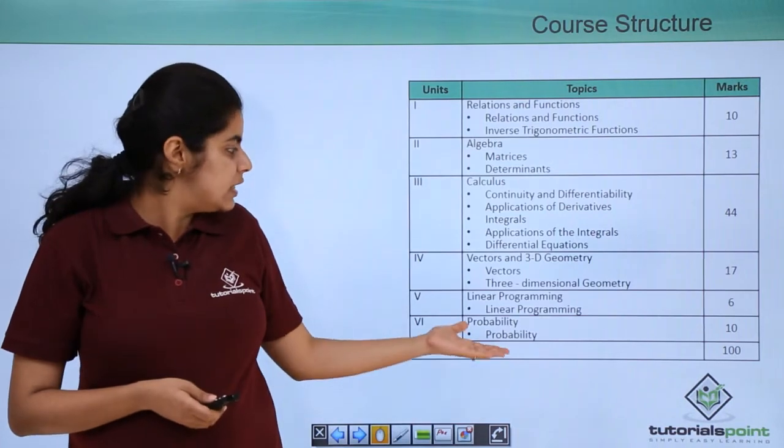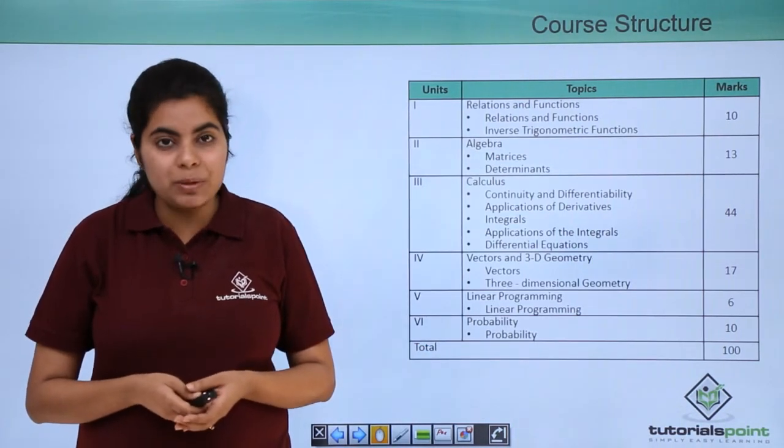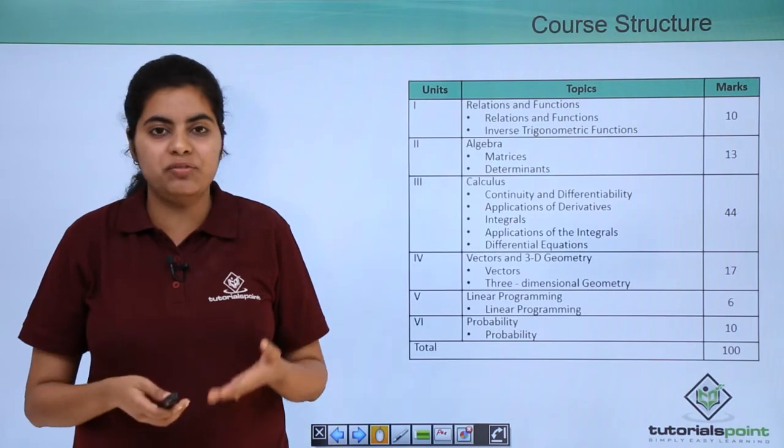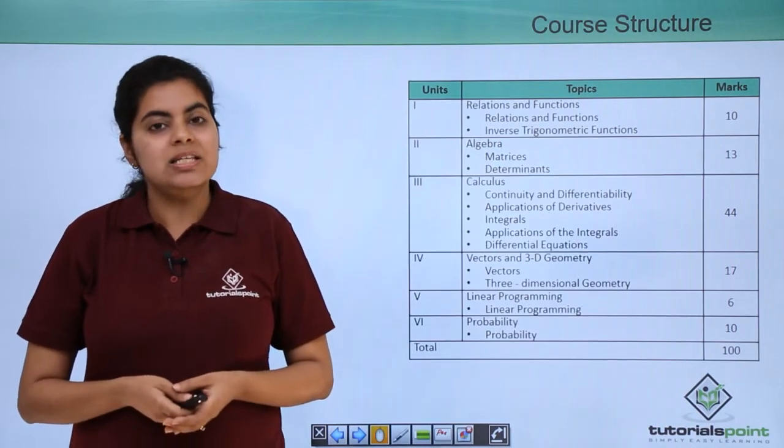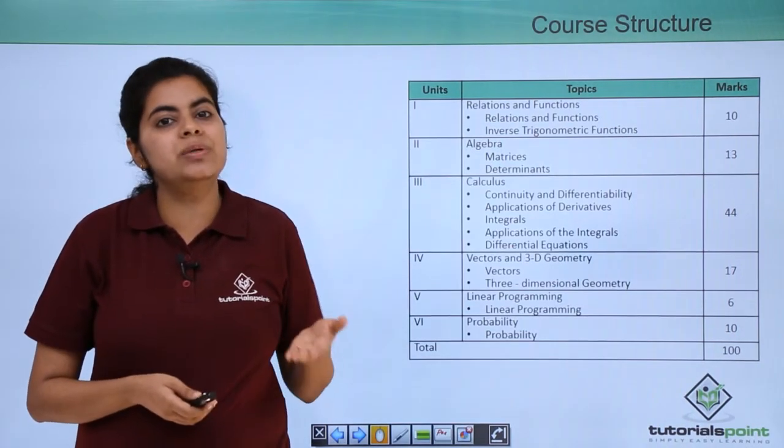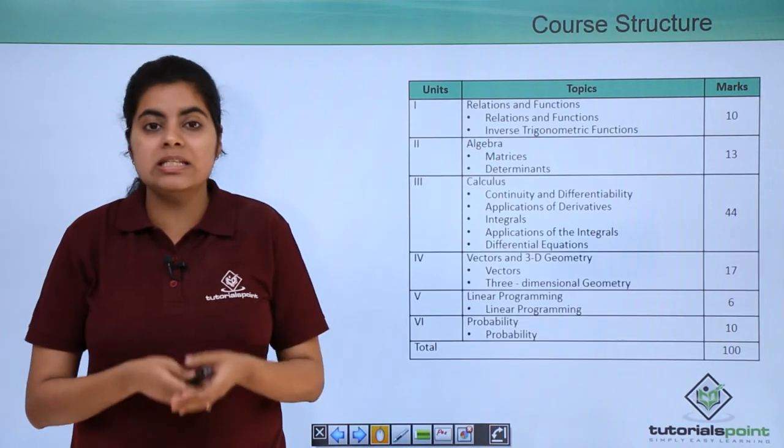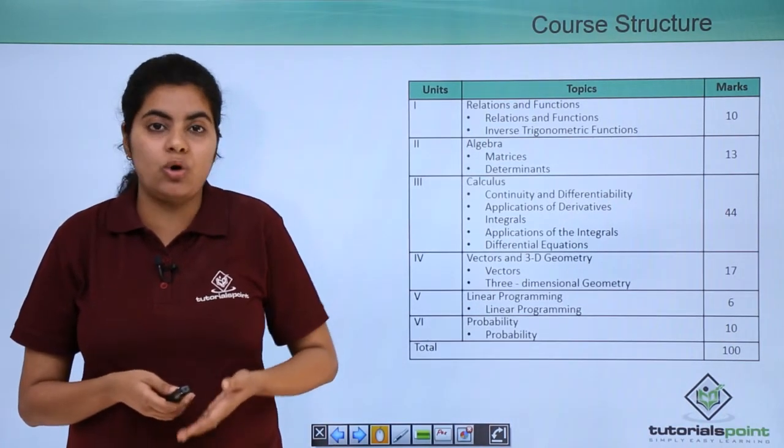Last unit that is in the syllabus mentioned is probability. Probability you have been studying from your junior classes as well. So in class plus two you'll be studying probability in more detail. This is again very important if you have to opt for engineering.